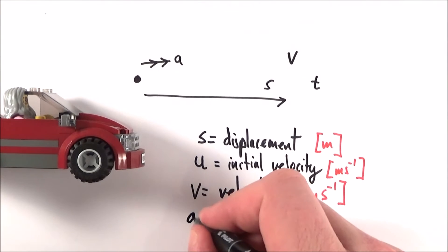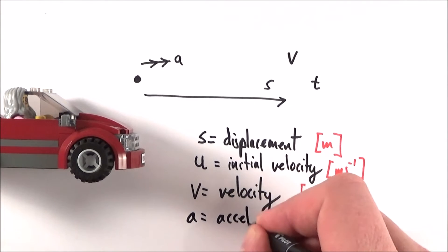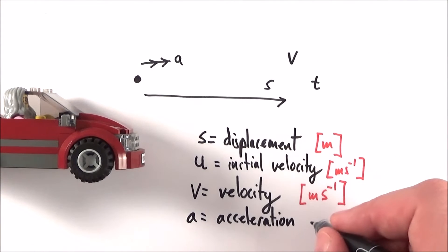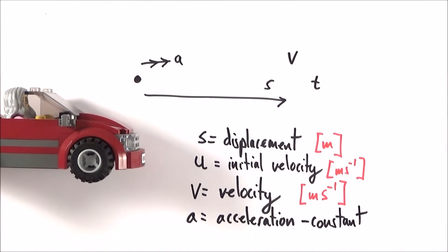Next, we have acceleration. The important thing for these equations of motion is that acceleration must be constant, measured in meters per second squared.